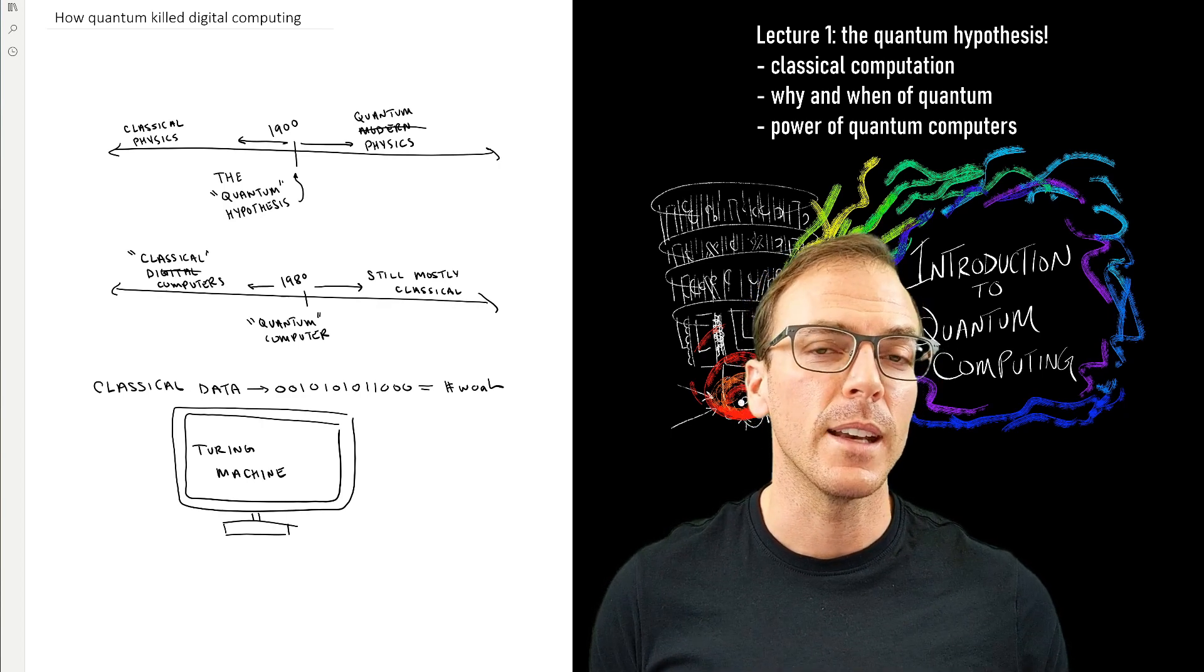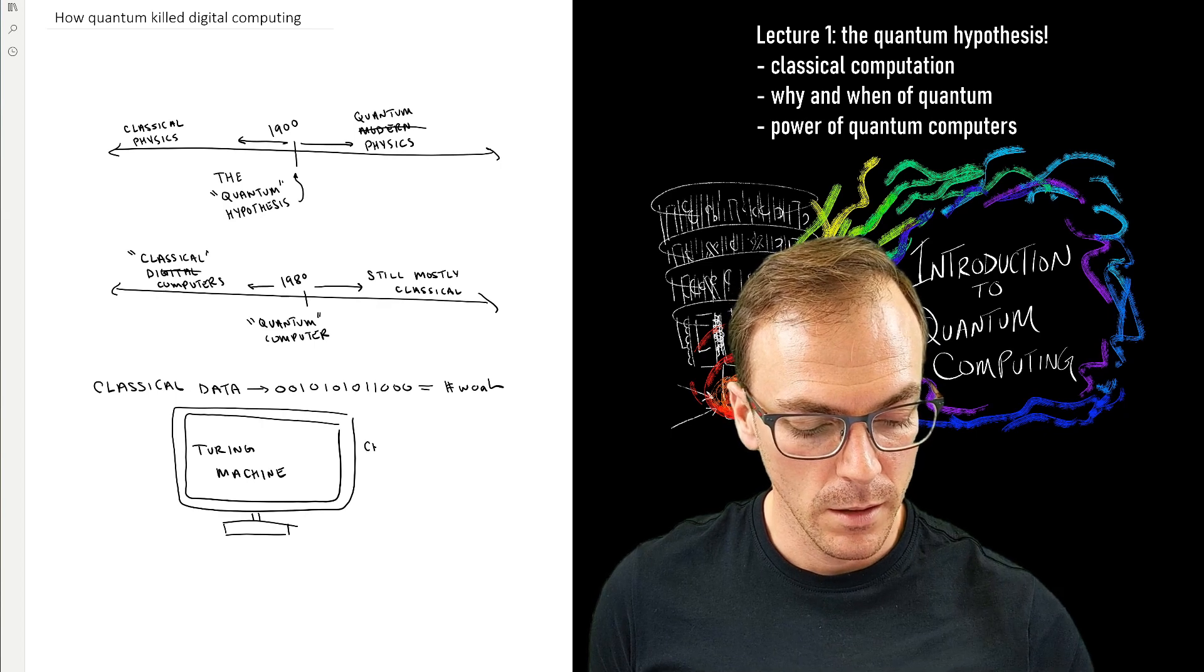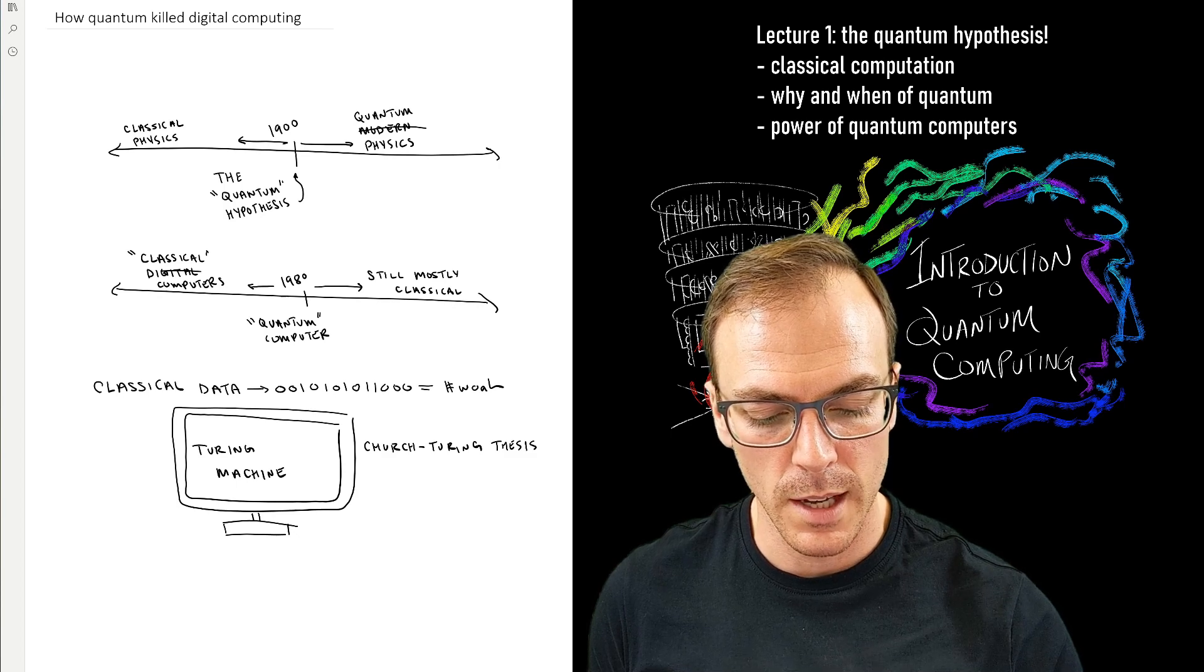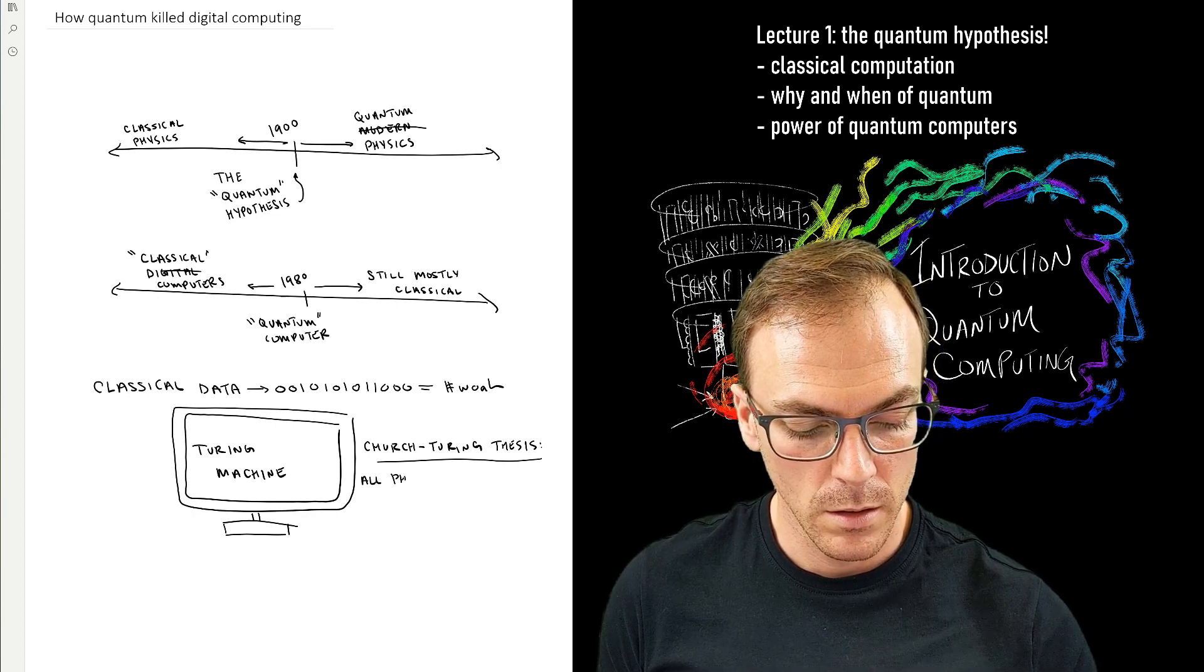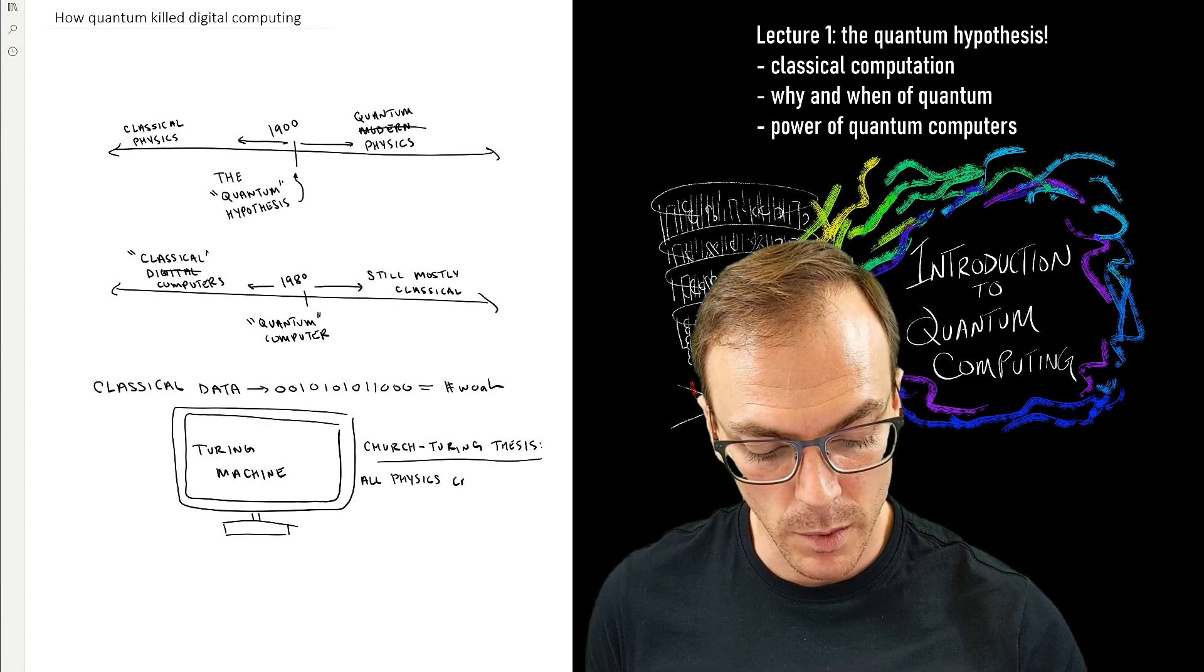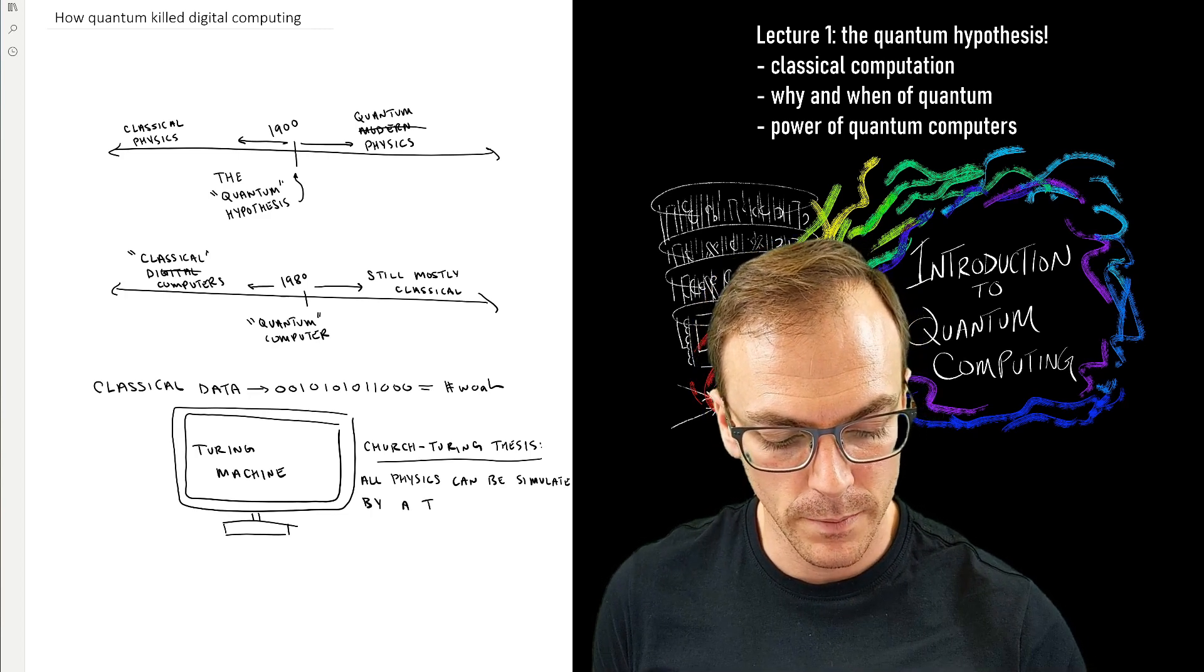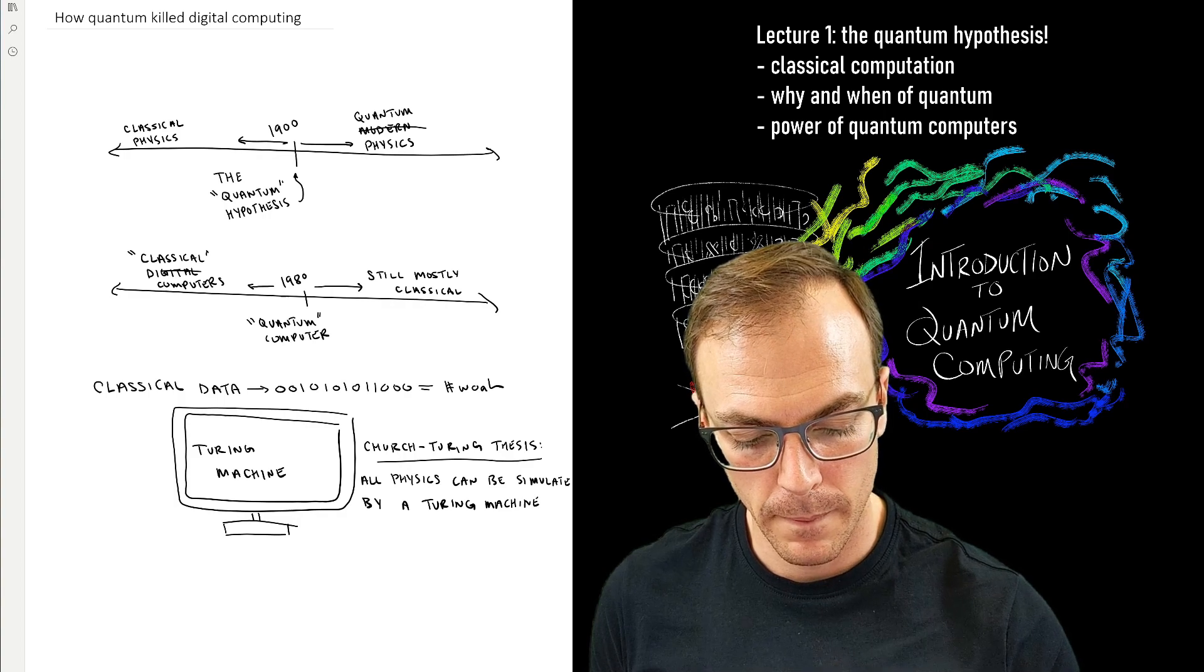The idea is there's some device that you can describe that is universal. So it can simulate any other device, and that device is called a Turing machine. It's related to, or used in, the statement of the Church-Turing thesis, which formalizes what I just said. And that is that all physics, all physical phenomena, all things in the world, can be simulated by a Turing machine.